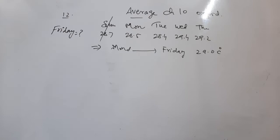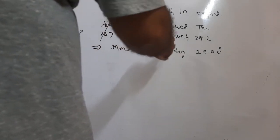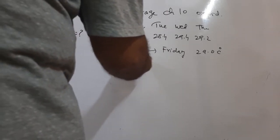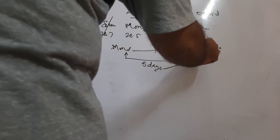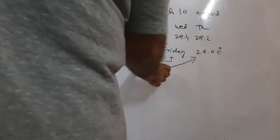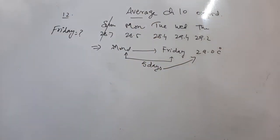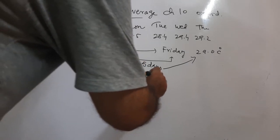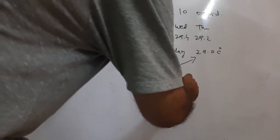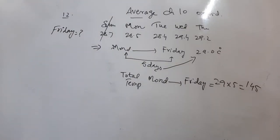We have the temperature from Monday to Friday — five days. If we multiply the average by the number of days we get the total temperature. So the total temperature from Monday to Friday is 29 multiplied by 5, which gives 145 degrees.